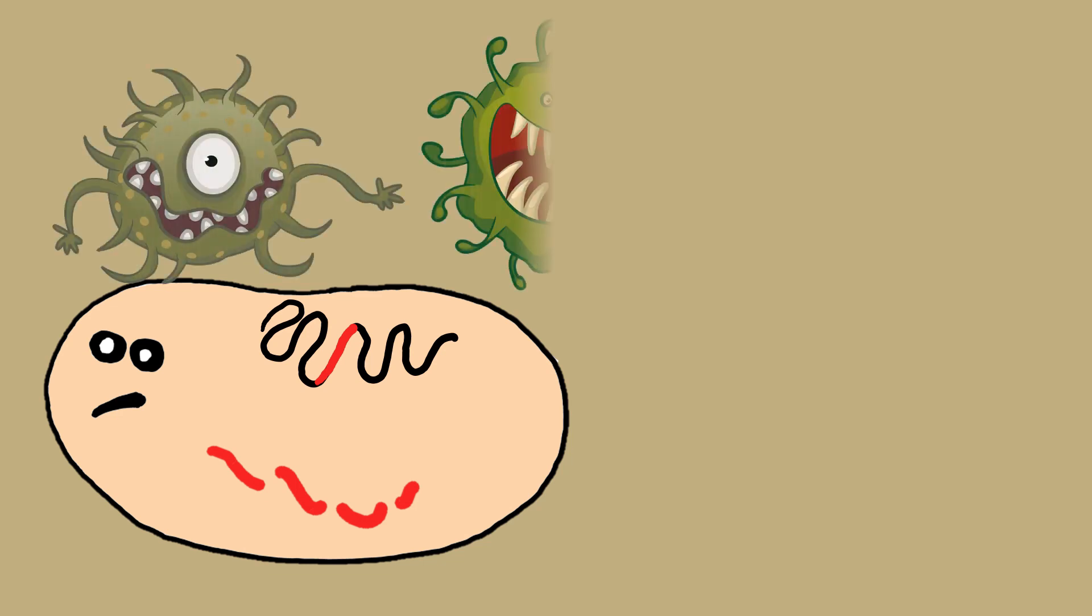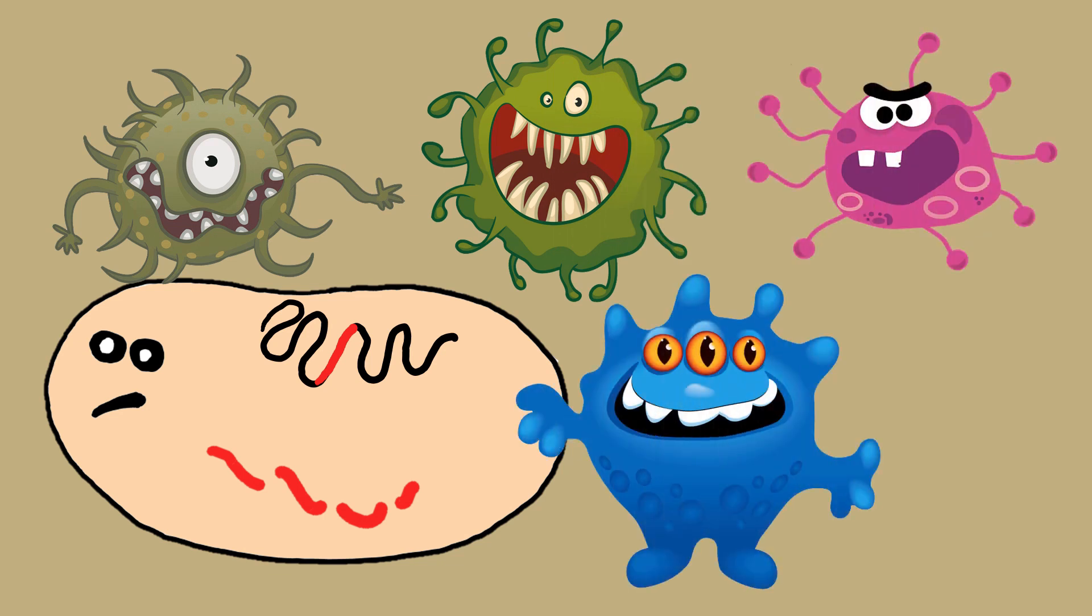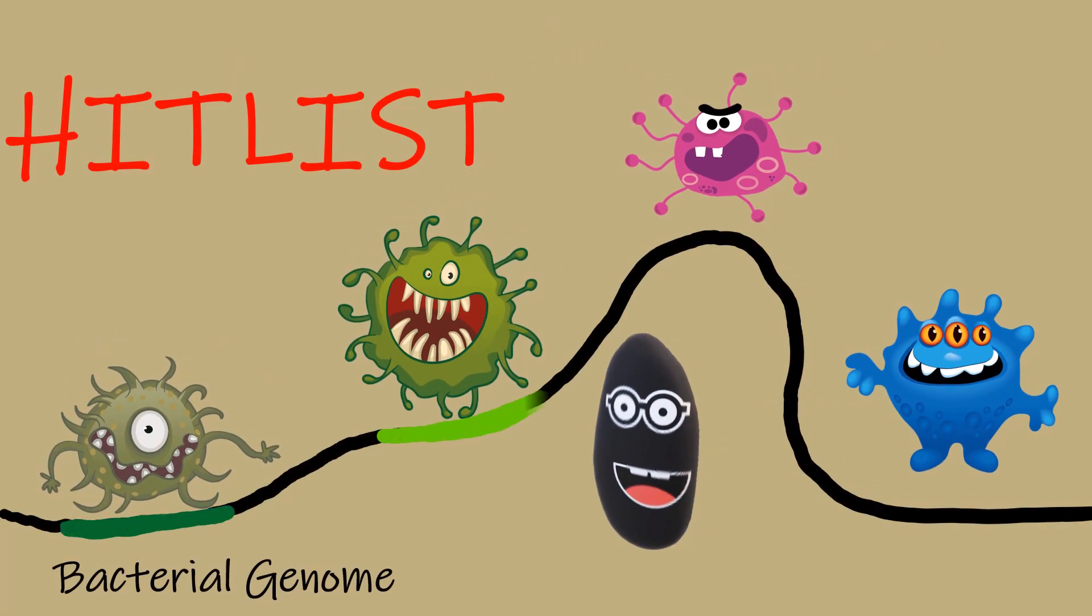During its lifetime, the bacteria comes in contact with many viruses. So it creates a hit list in its genome. The hit list contains short 20 nucleotide sequences from the viral DNA and this hit list is known as CRISPR.